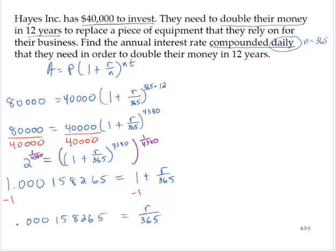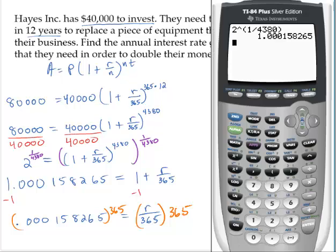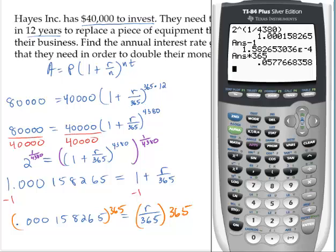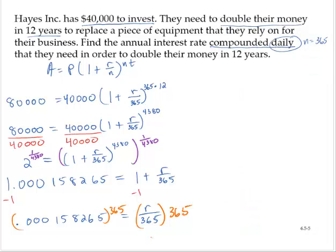And finally, let's multiply through by 365. So we're multiplying here. Let's do that on the calculator. We had that quantity on the calculator. Let's subtract the 1. And let's multiply by 365. And we have 0.05776.